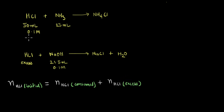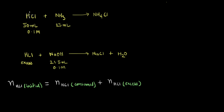We know that the total number of moles we started with will be equal to the number of moles consumed plus the number of moles in excess. So from the second reaction we can calculate the number of excess moles of HCl, and from this we can calculate the initial number of moles consumed. The number of moles of HCl consumed equals the number of moles of NH3 consumed, which we use to calculate the concentration of NH3.